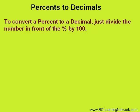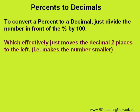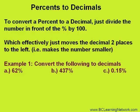To convert a percent to a decimal, just divide the number in front of the percent sign by 100. The reason why we do this is because percent means out of 100. When you divide something by 100, it effectively just moves the decimal two places to the left. Let's try some examples here and see.